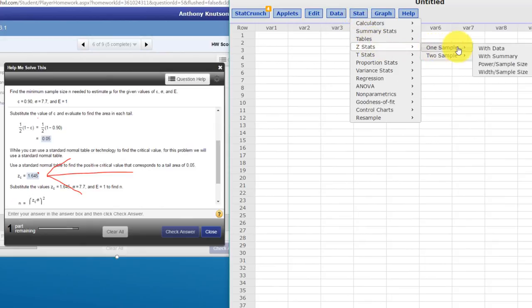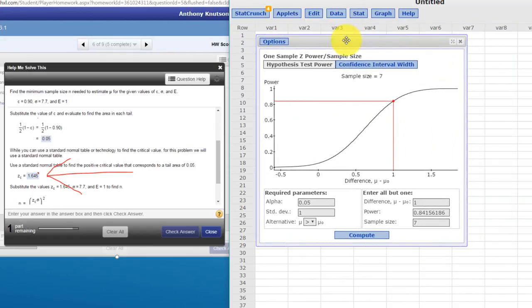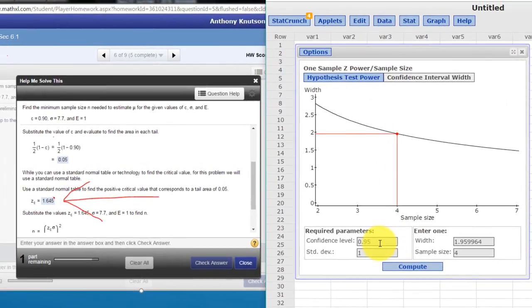We go to Z Stats, one sample, power, sample width. And when we come up here we want to click on the confidence interval width portion of the sample Z power sample size.